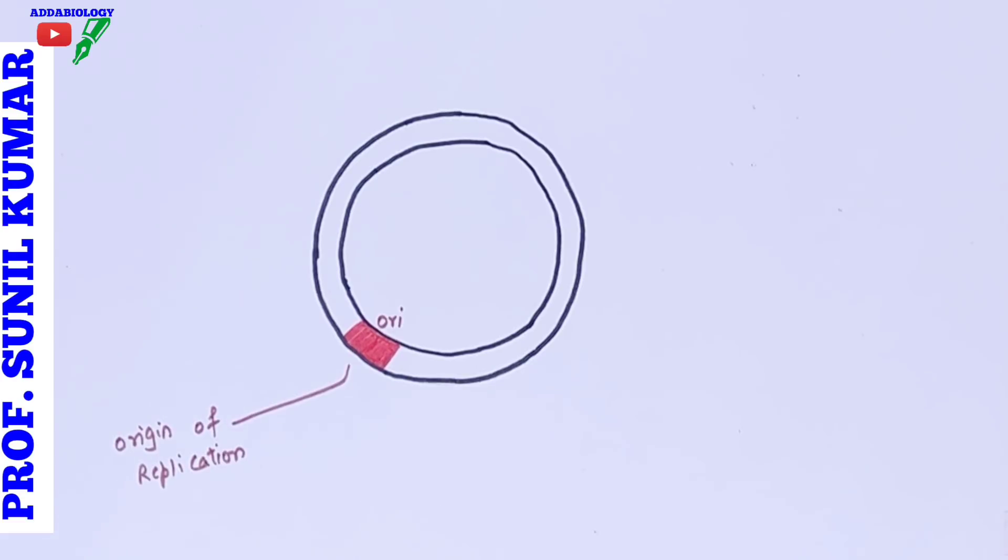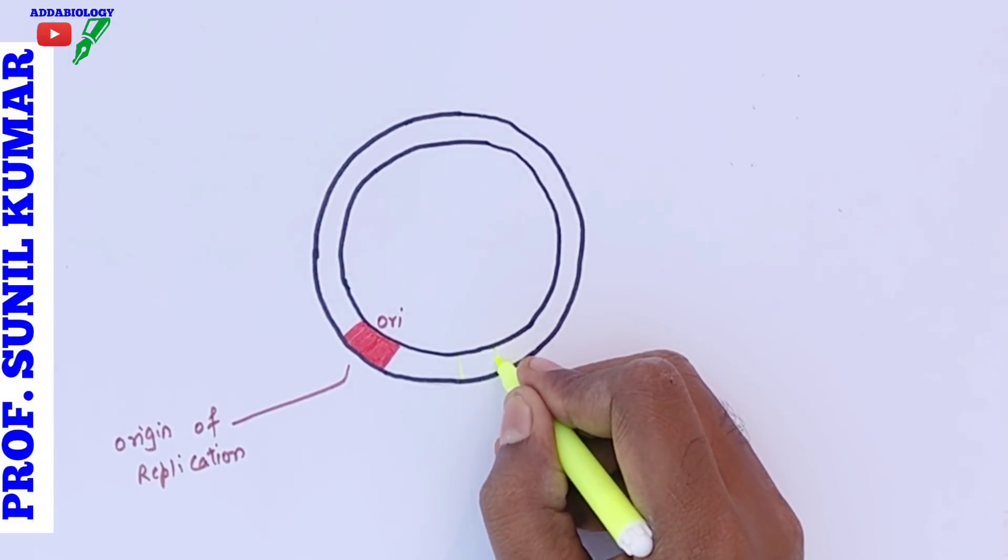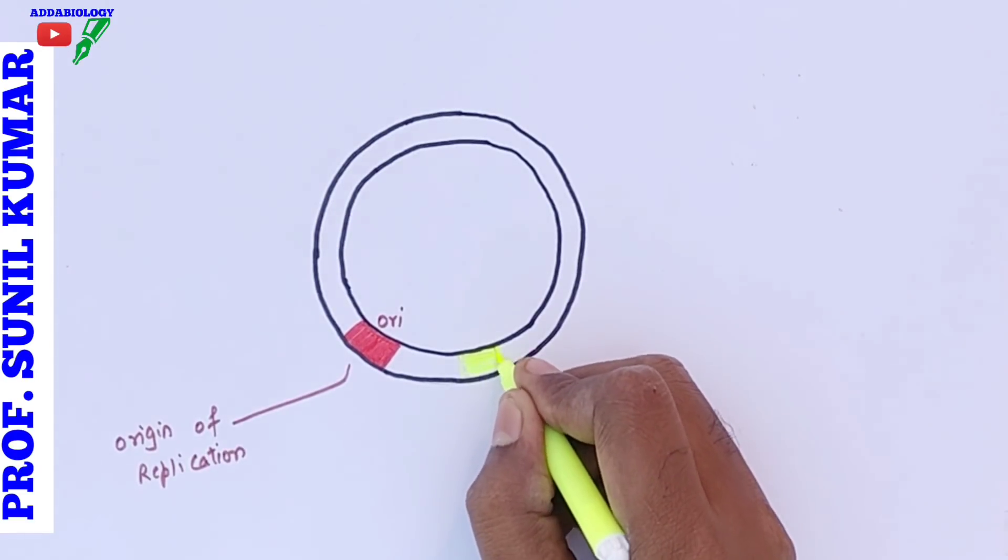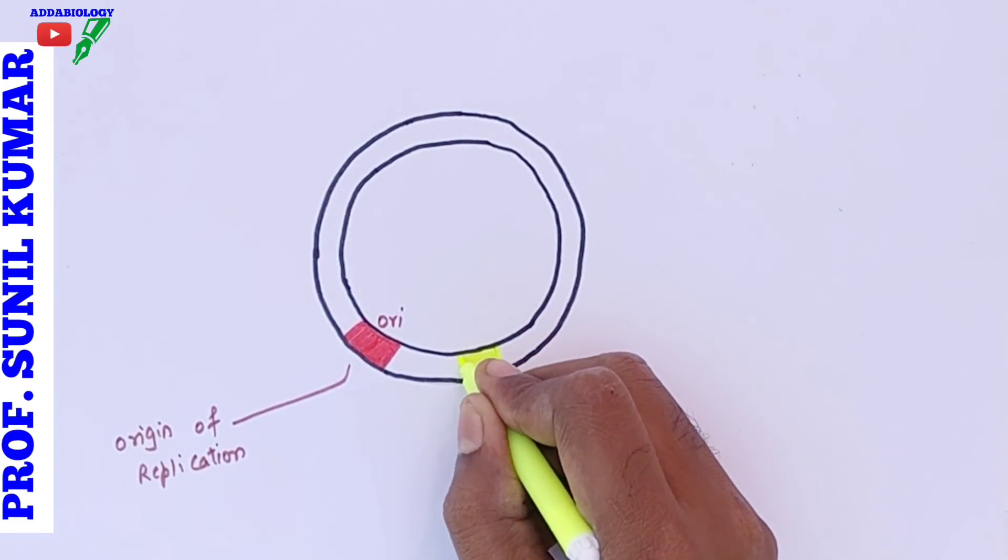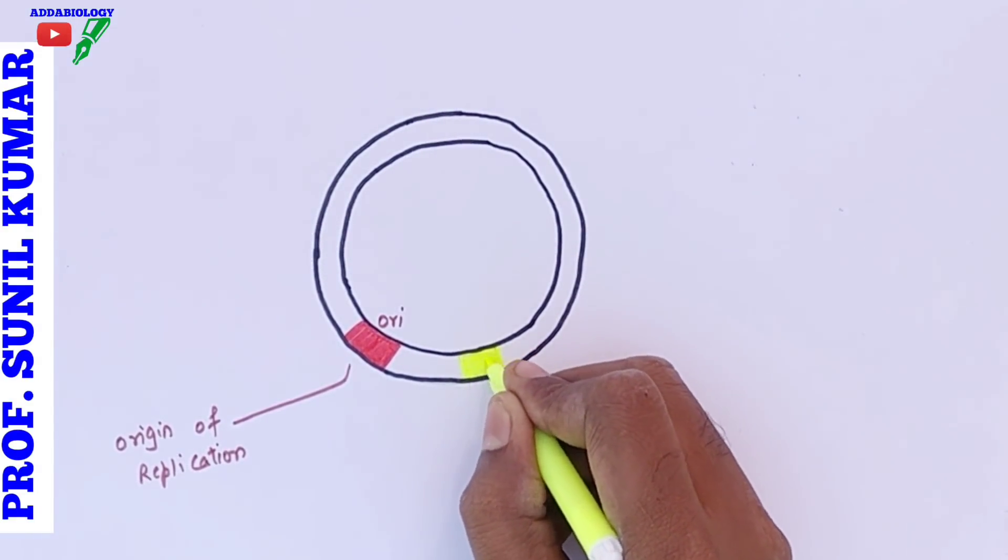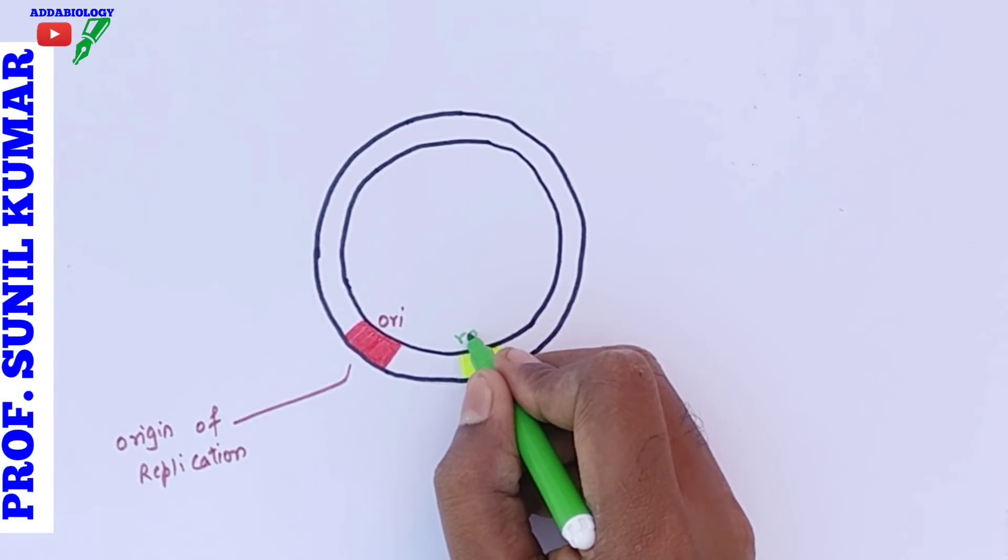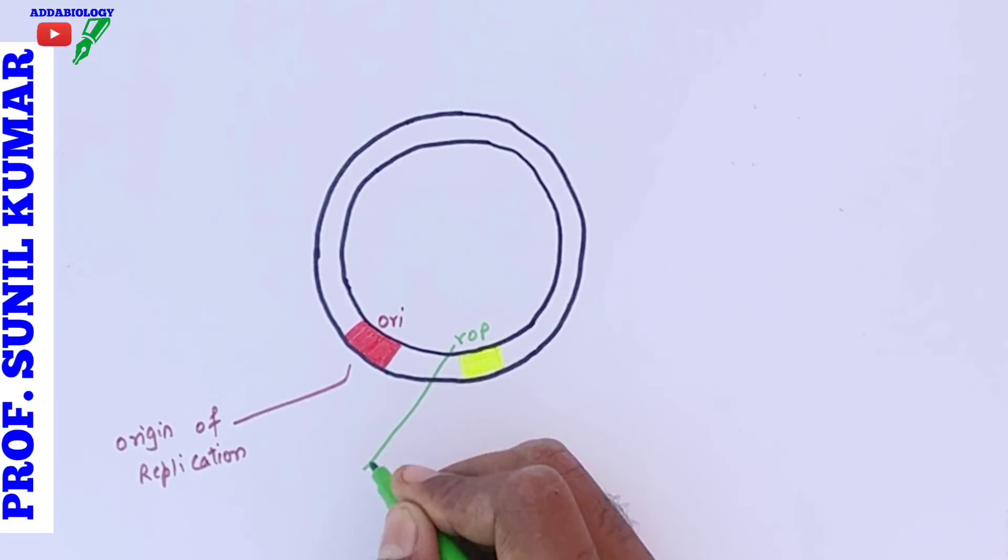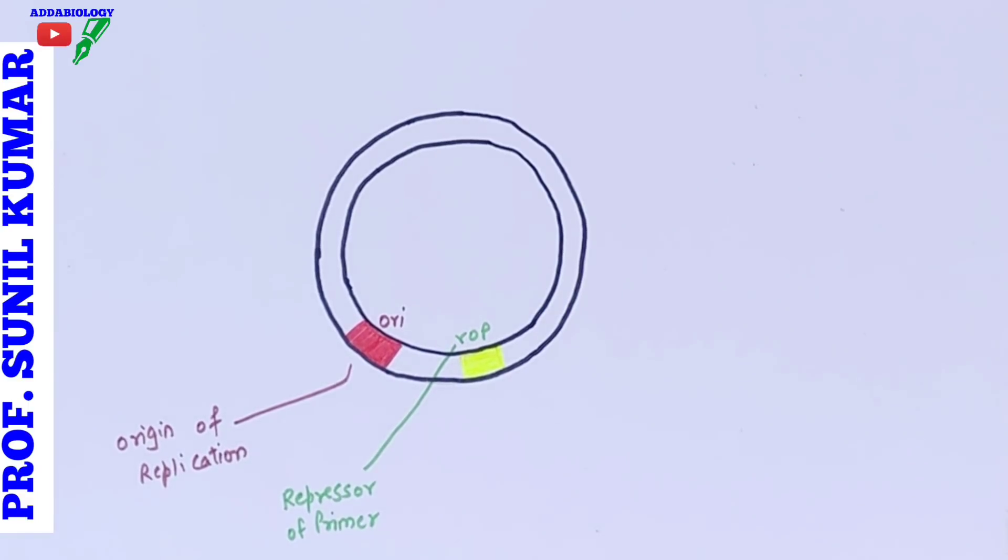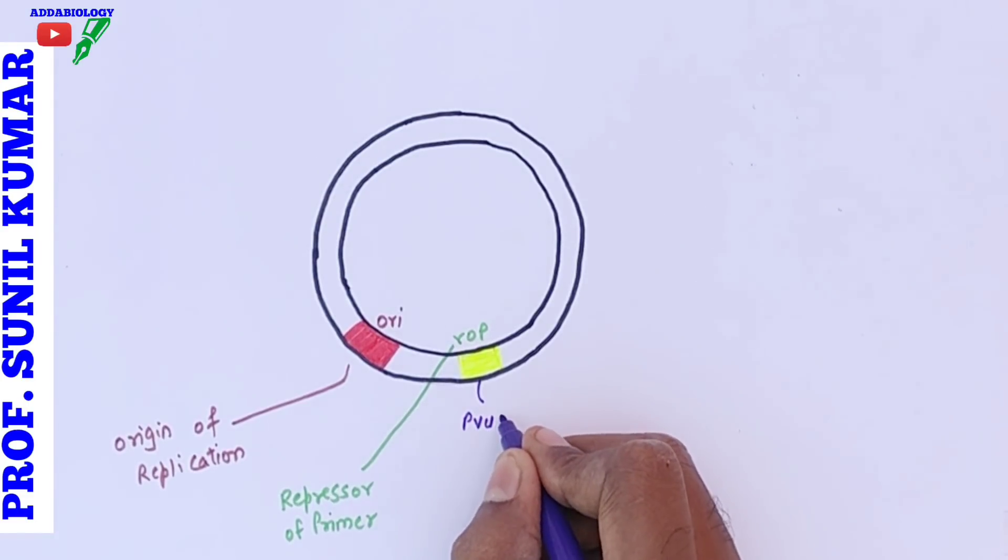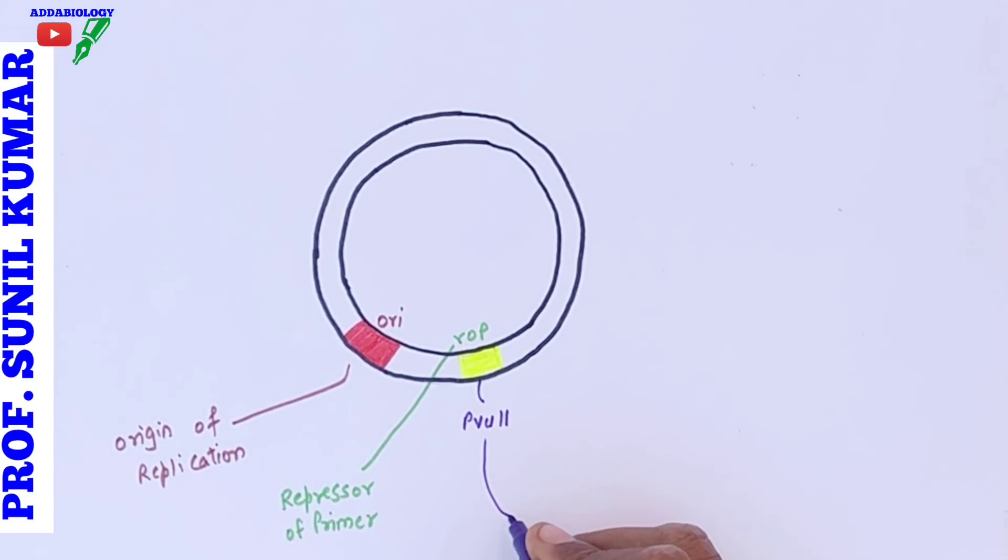Next to the origin of replication we have something called rop. Most of the time we are confused about the full form of rop. Remember, rop stands for repressor of primer. It's the point where the primers actually get repressed.